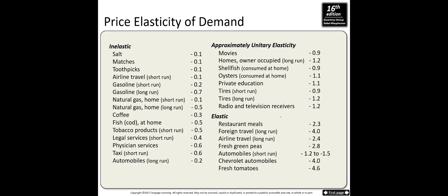Here are price elasticity values for selective goods. Inelastic goods include salt, matches, toothpicks, air travel short run (very inelastic), gasoline short run (very inelastic, though somewhat less inelastic long run), natural gas, coffee, fish, and tobacco short run. Elastic goods include restaurant meals, foreign travel long run, airline travel long run, fresh green peas, automobiles, Chevrolet automobiles, and fresh tomatoes.